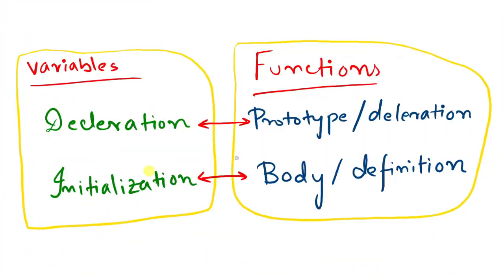Now, how we can declare a function. For declaration, we use a term called prototype. Prototype is just like a trailer to a film — before we get introduced to a film, we see its trailer. Similarly for functions, before we get to know what the function does, the prototype tells you how the function looks. So it's just a precursor to the actual body of the function.